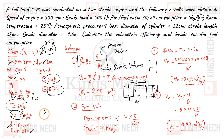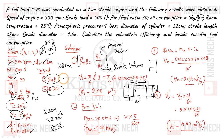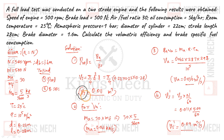D is 22 cm, which is 0.22 m, and L is 28 cm, which is 0.28 m. Using π/4 × D² × L, I got 0.011 m³. So that is my stroke volume. Very simple.